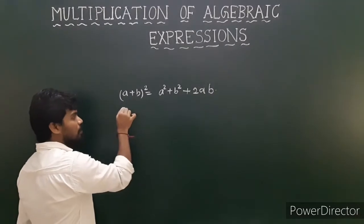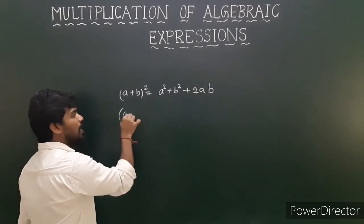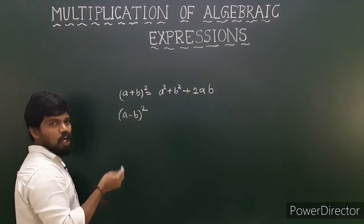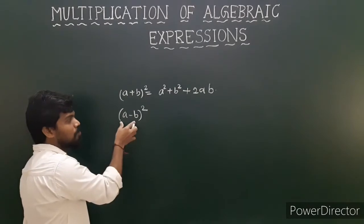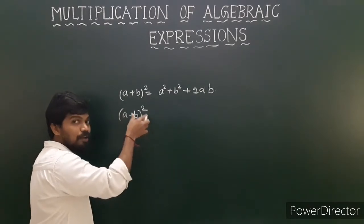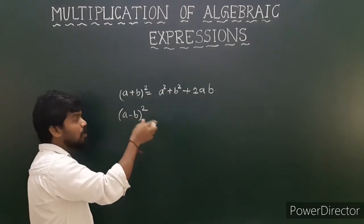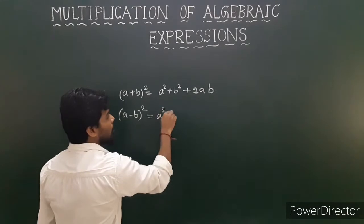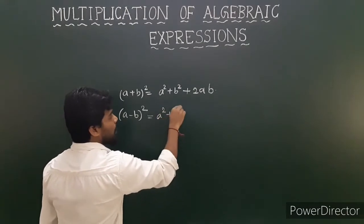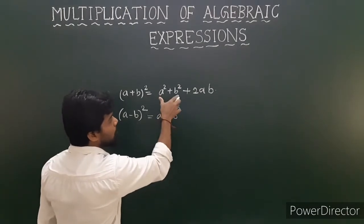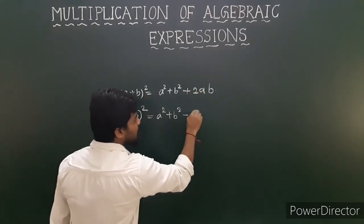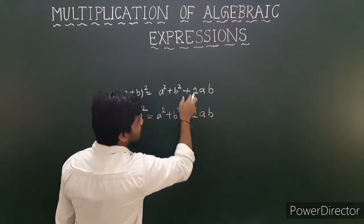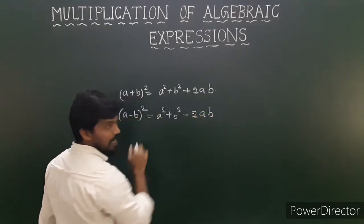The second identity: a minus b whole square. If any number or expression is in the form of a minus b into a minus b, you apply this one. You get a square plus b square minus 2ab. The only change is the negative sign.